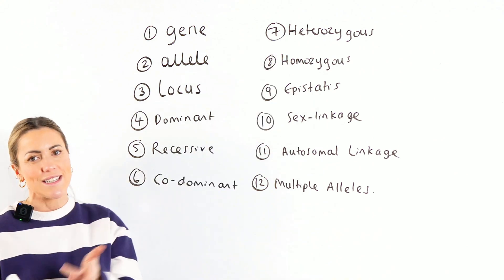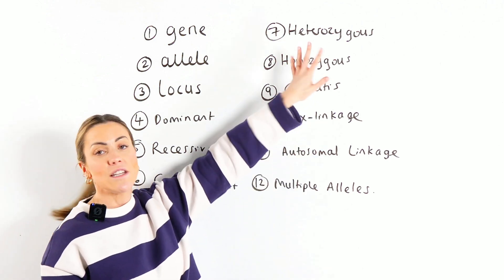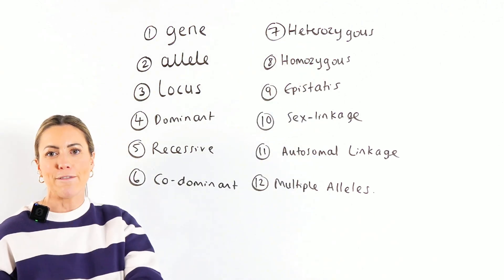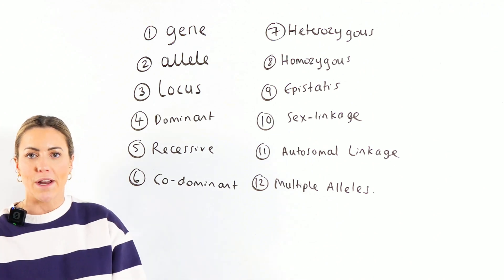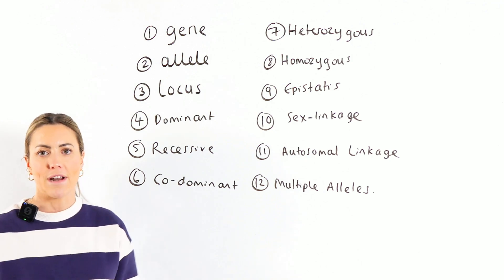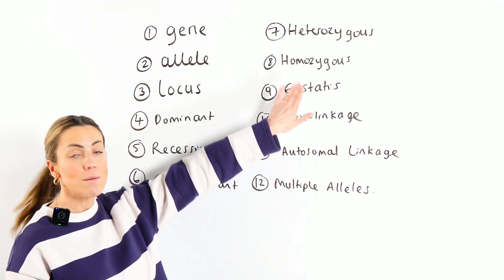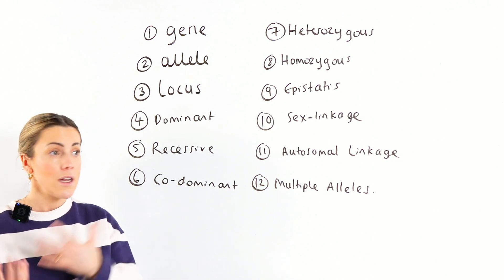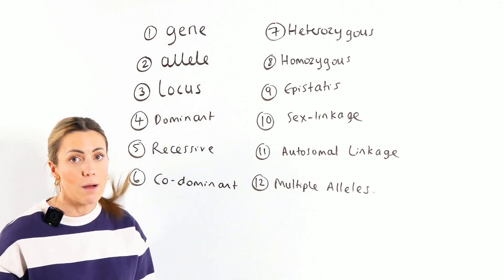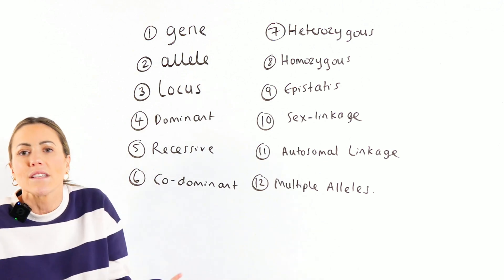Heterozygous, super easy GCSE definition. That just means you have two different alleles for a gene. It might be a dominant and a recessive. Two different alleles for the same gene. Whereas homozygous just means you have two of the same alleles. Two recessive alleles, two dominant alleles. They're just two of the same alleles.